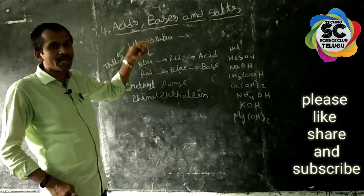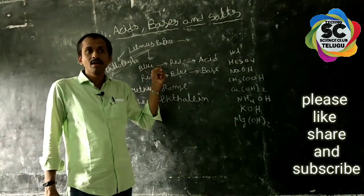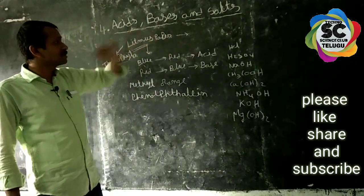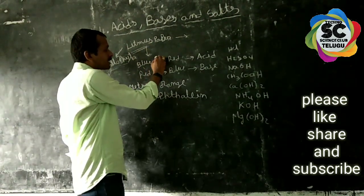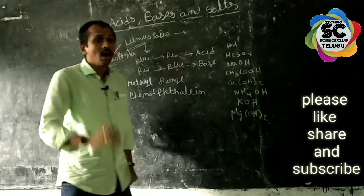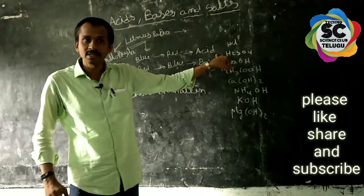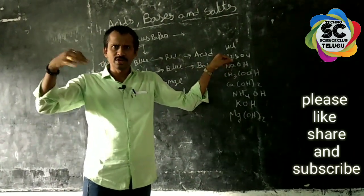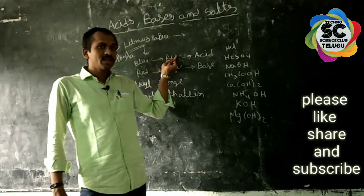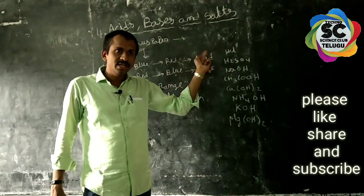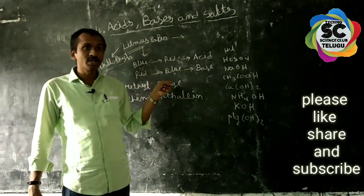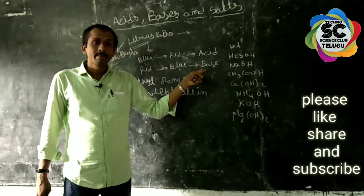This litmus liquid is used as an indicator to test whether a solution is acid or base. Blue litmus paper turns red — that is acid confirmation. Red litmus paper turns blue — that is the base.